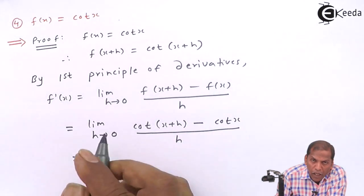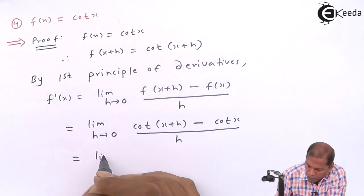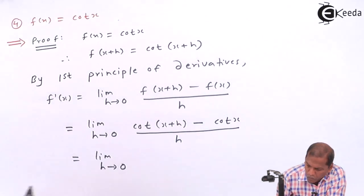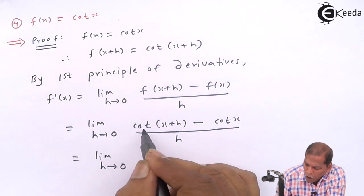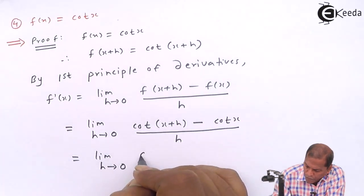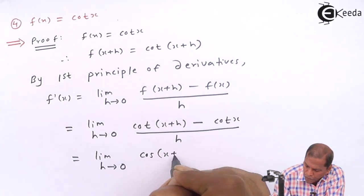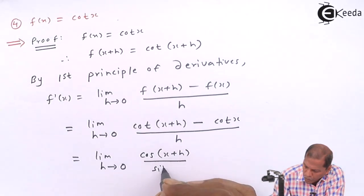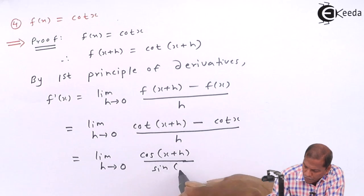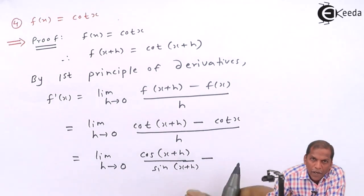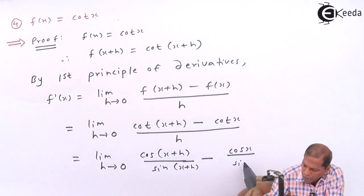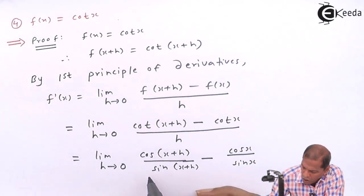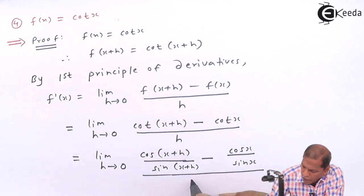The next step will be limit h tends to 0. Now for cot(θ), we apply the formula cos(θ) upon sin(θ). Therefore, cot(x+h) can be written as cos(x+h) upon sin(x+h), minus for cot(x) we write cos(x) upon sin(x), and then whole thing divided by h.